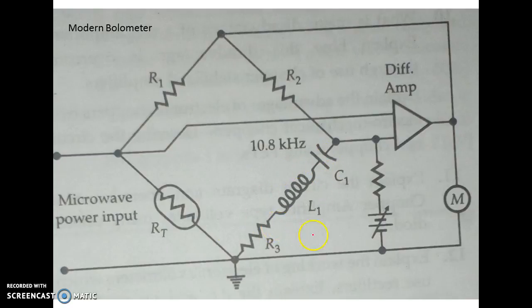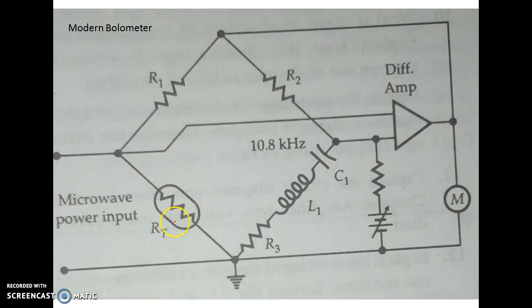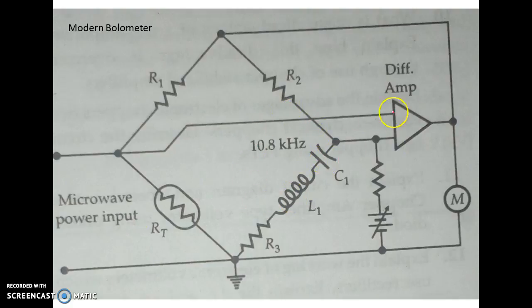Next we have the simplified diagram of the modern bolometer. In addition to the bridge circuit, it has a resonant circuit and a variable DC voltage. When the bridge is imbalanced, it oscillates at a resonant frequency; when balanced, you get the meter reading. When microwave input is given, the bolometer changes its resistance, causing an imbalance in the circuit. A known input voltage is applied and the output of the differential amplifier is measured. When the microwave input is given, there is a change in the differential amplifier output, and the difference between the two values is measured by the meter to give the appropriate power reading.